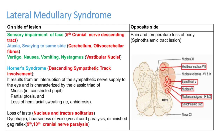Another important ipsilateral finding is involvement of the nucleus and tractus solitarius, causing loss of taste. Additionally, the ninth and tenth cranial nerves are involved, so the patient can have dysphagia, hoarseness of voice, vocal cord paralysis, and diminished gag reflex — all on the side of the lesion.